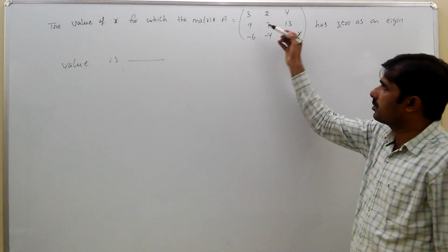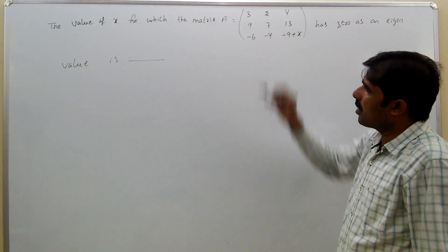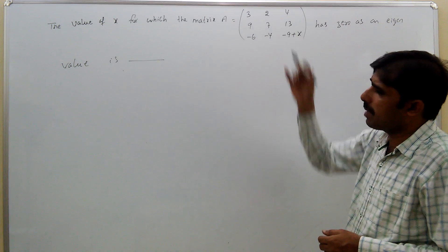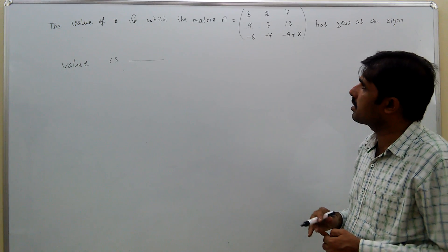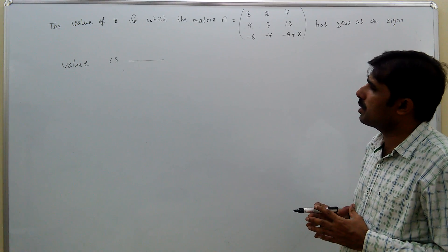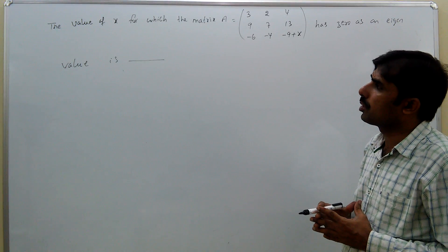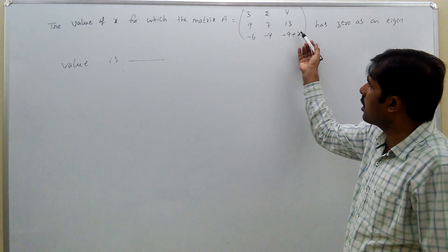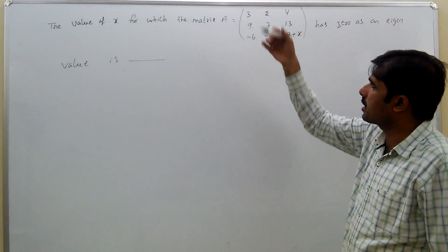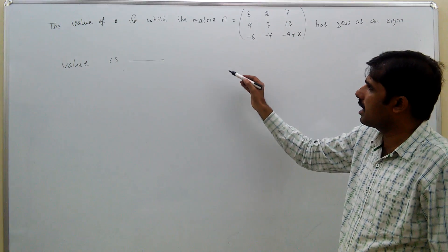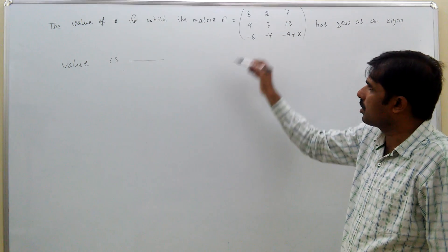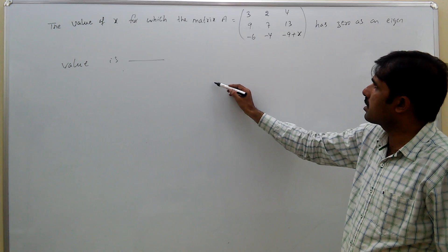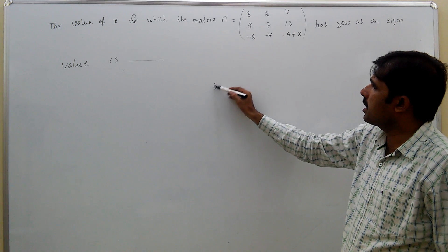That means one of the eigenvalues must be 0. For a matrix, this means the determinant must be 0. So we will find the value of X for which the determinant equals 0.